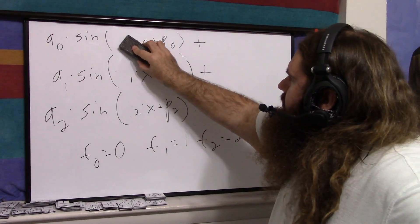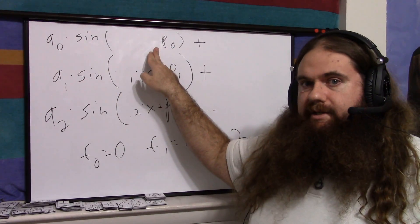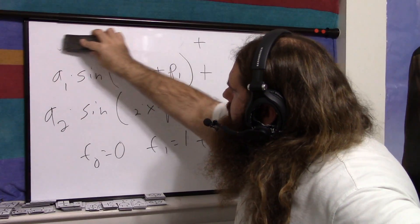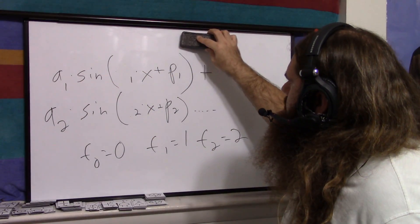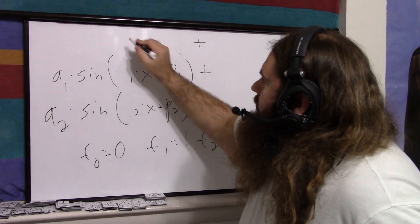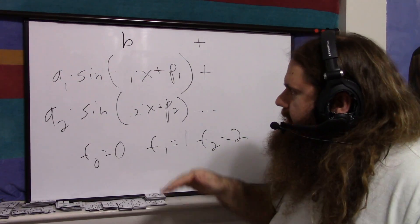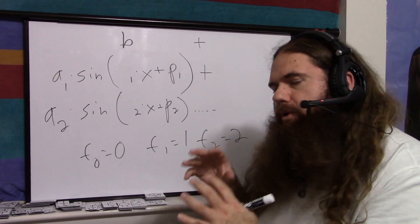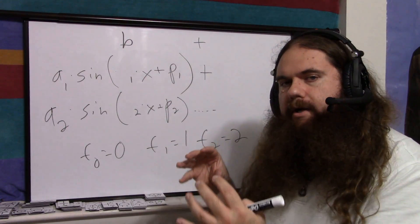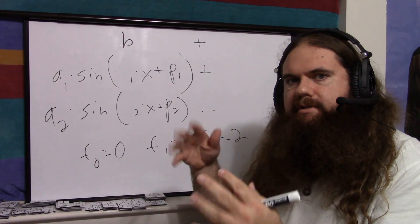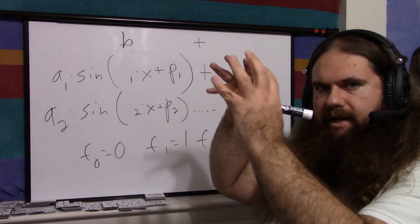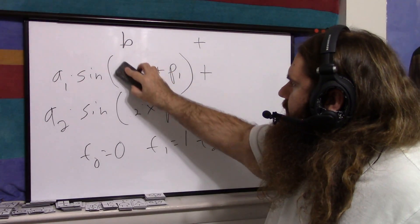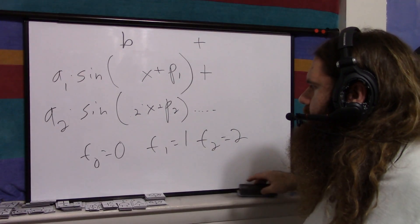Well, 0 times x is 0. The sine of a constant number is a constant, so we can call this just b — that's called the bias. Basically, you've got your wave and it's shifted up or down. That's your bias. Ideally your bias will be 0, but it's not always going to be that way. The bias is just the up and down offset, because you're adding a constant number to everything.